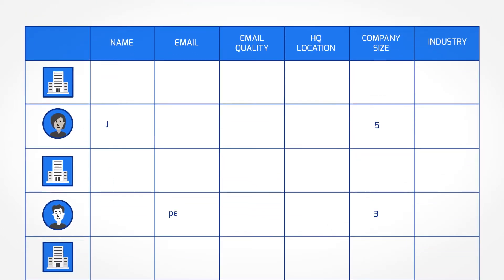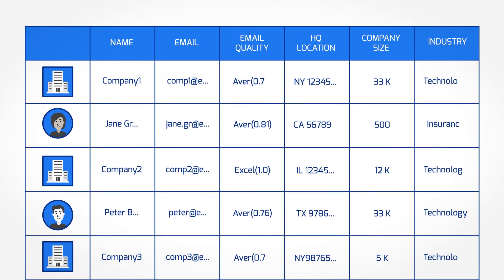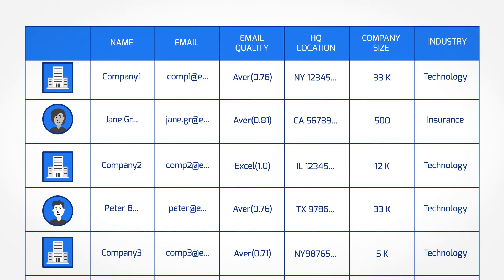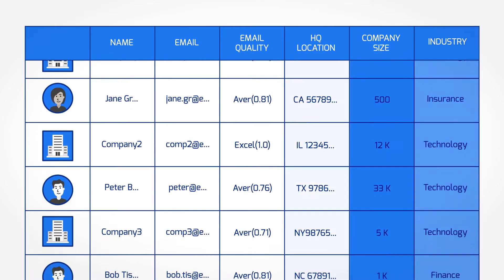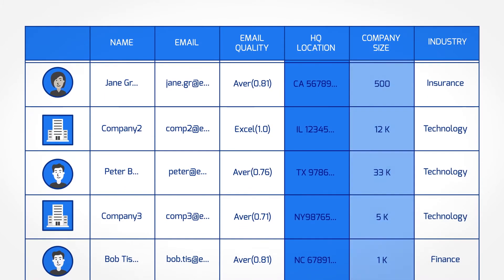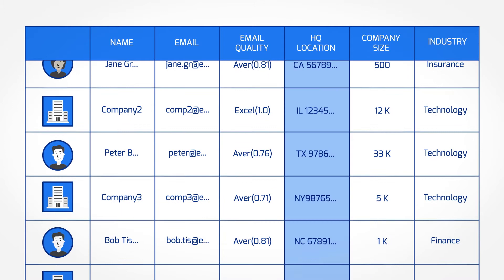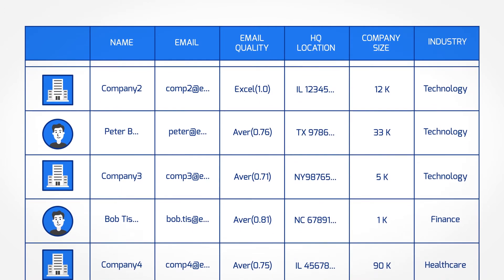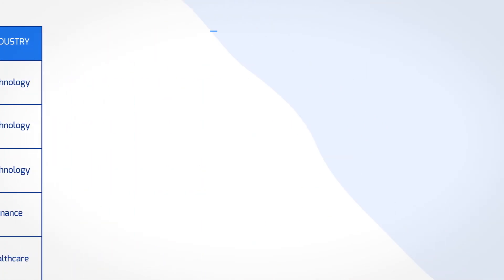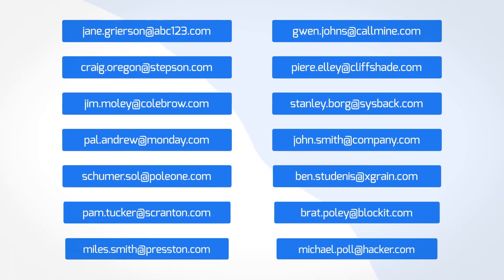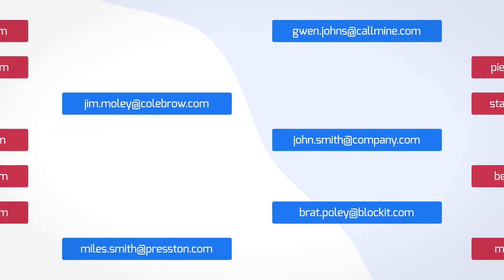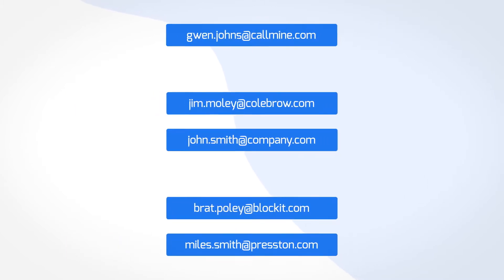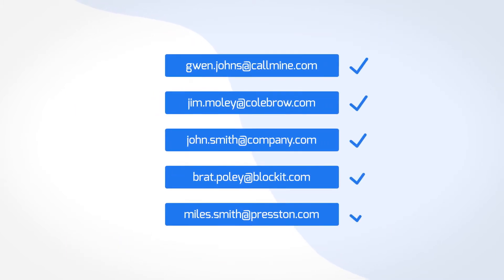There are so many benefits to that. Additional fields such as industry, company size, and HQ location increase your targeting options. While the business email validation feature helps identify junk emails that you can remove to save on storage costs.